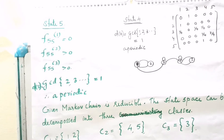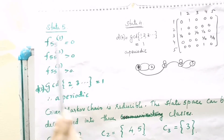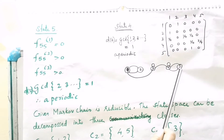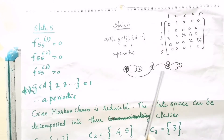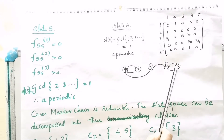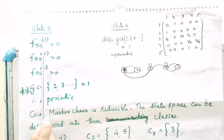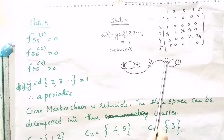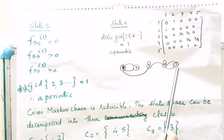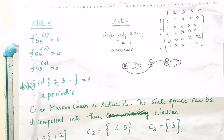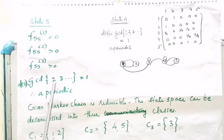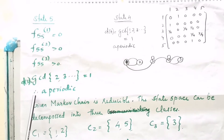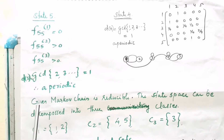For state 5, going 5 to 5 in 1 step is not possible, but 5 to 5 in 2 steps is possible. Going 5 to 5 in 3 steps — that is 5 to 4, then 4 to 4, then 4 to 5 — is also possible. So GCD of {2, 3, 4, ...} equals 1, meaning state 5 is aperiodic.